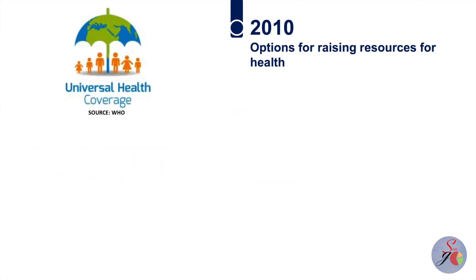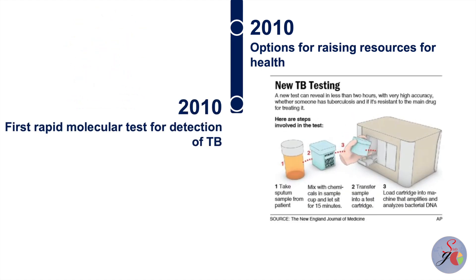In 2010, WHO issued a menu of options for raising sufficient resources and removing financial barriers so that all people, especially those with limited resources to spend on healthcare, have access to essential health services. The first rapid molecular tests for the detection of TB were established in 2010, after decades of using only sputum smear microscopy. The new tests helped diagnose TB more accurately and identify drug resistance earlier.